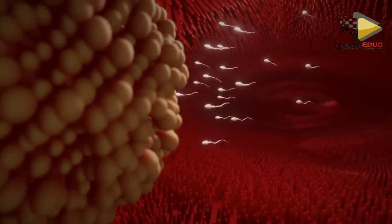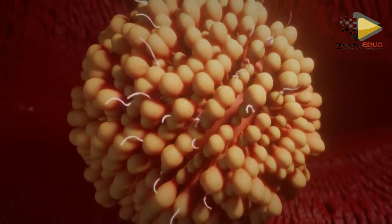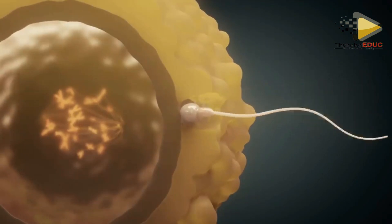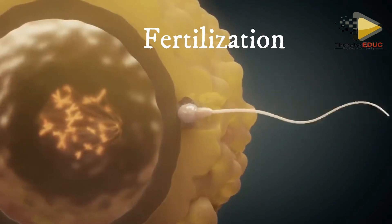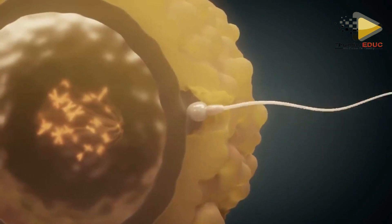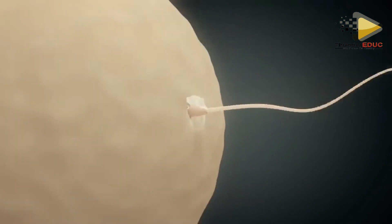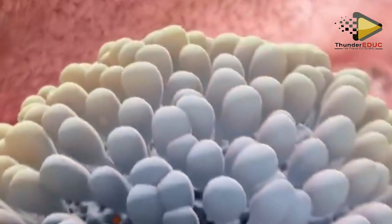When sperm approach the ovum, only one sperm will fertilize the ovum. It uses its head because it contains enzymes which digest the membrane of the ovum for fertilization to occur.